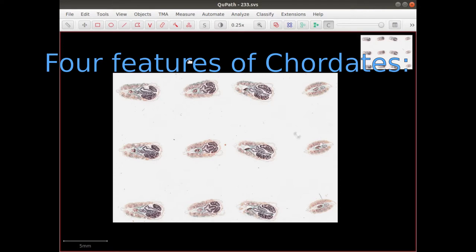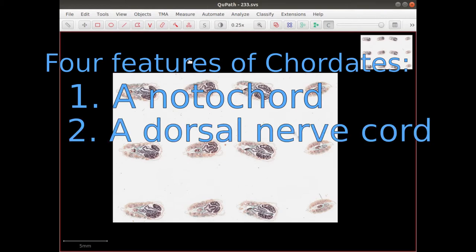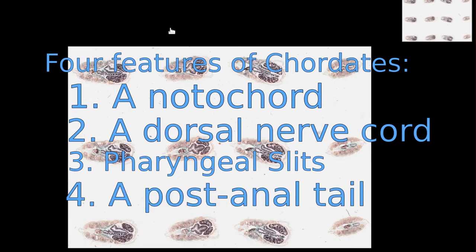Instead, chordates are classified based on the presence of four features: a notochord, a dorsal nerve cord, pharyngeal slits, and a post-anal tail.